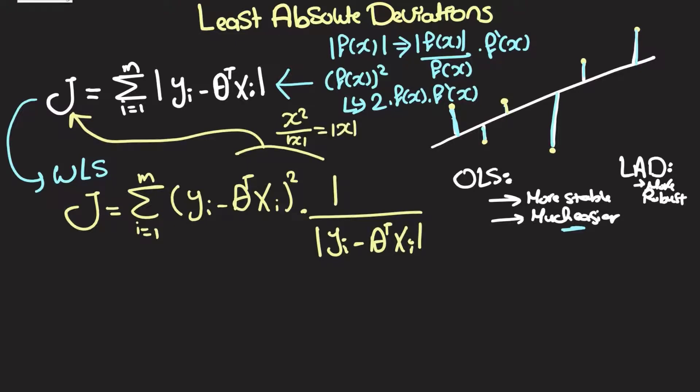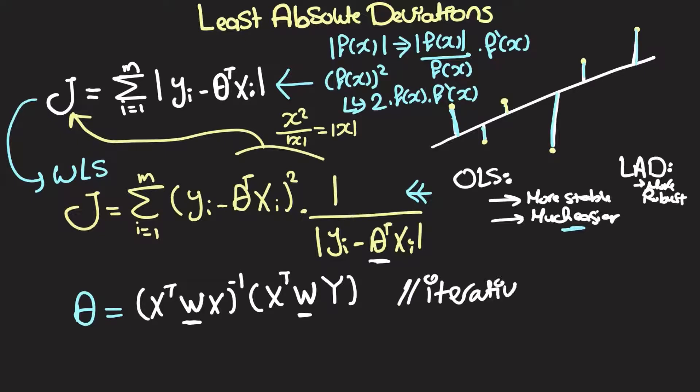We've already come up with a solution for the weighted least squares approach: theta equals x transpose w x all inverse multiplied by x transpose w y. And here we've got a problem, and that is the weight itself is going to be a function of theta. So this is going to be an iterative scheme. This is not a closed form solution. In fact, least absolute deviations does lack a closed form solution because of this property.